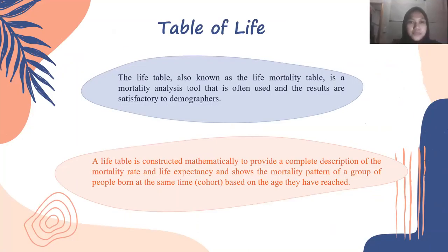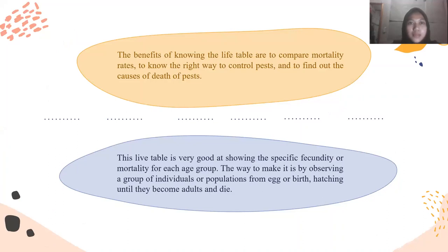Next, the life table. The life table, also known as the life mortality table, is a mortality analysis tool that is often used by demographers. It is constructed mathematically to provide a complete description of the mortality rate and life expectancy, showing the mortality pattern of a group of organisms born at the same time based on the age they have reached. The benefits of knowing the life table are to confirm mortality records, to know the right way to control pests, and to find out the causes of pest death. This life table is very good at showing specific fecundity or mortality for each age group.